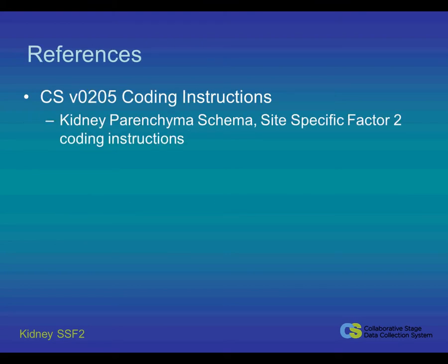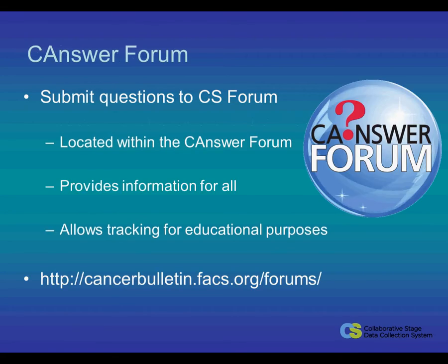Detailed information can be found in the Collaborative Stage version 2.05 coding instructions for the kidney parenchyma schema CS Factor 2. Please submit your questions to the Collaborative Stage forum, which is part of the cancer forum. This provides not only an answer for you, but information for everyone, and allows us to track it for educational purposes and choose the topics for our next videos.